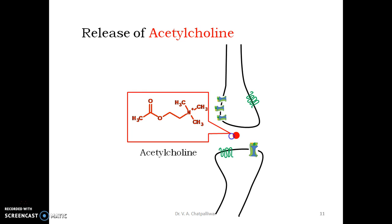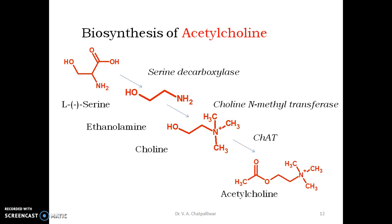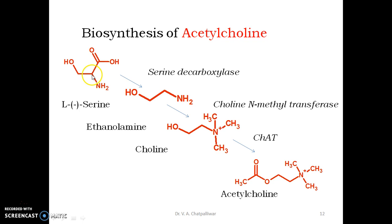Now let us look at the chemistry of the synthesis of acetylcholine. The synthesis starts from the amino acid L-serine, which is an alpha amino acid with a simple structure, having a carboxyl group and an amino group on the same carbon.